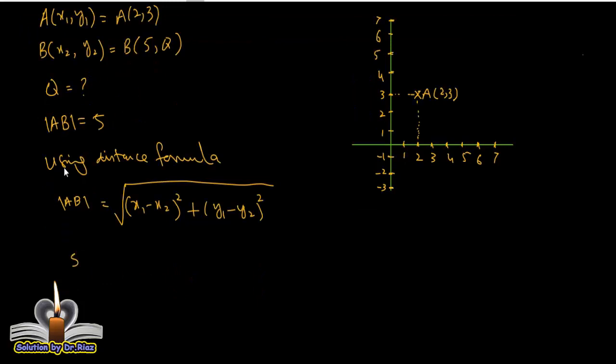Putting the values: AB which is 5 equals square root of (x₁, 2 minus x₂, 5) whole square plus (y₁, 3 minus y₂, Q) whole square.